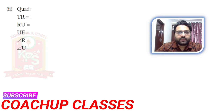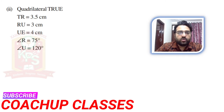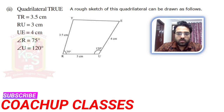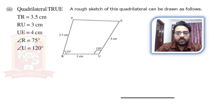Now coming to our next part, that is quadrilateral TRUE. Here you can see TR, RU, and UE are the three sides, and angle R = 75 degrees, angle U = 120 degrees. So first of all, here we will draw a rough sketch of TRUE. You can see RU = 3 cm, angle R = 75 degrees, angle U = 120 degrees, EU = 4 cm, TR = 3.5 cm. For construction, we will draw RU which is 3 cm like this.